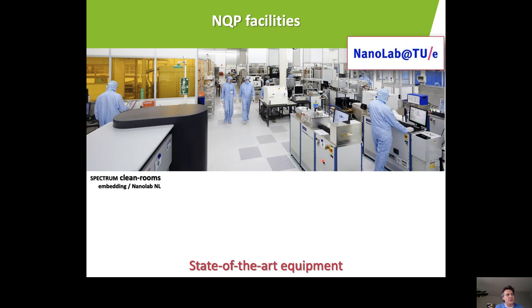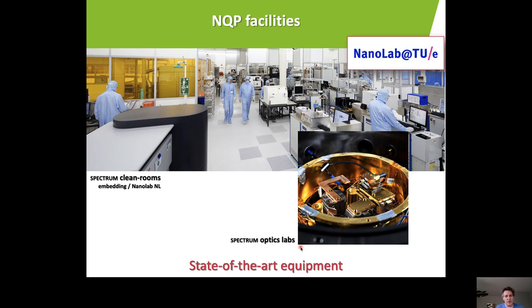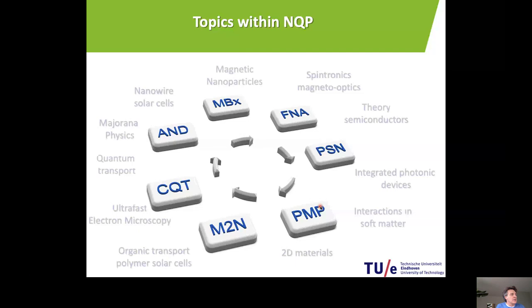At Spectrum, we have the clean room, which is mainly used by the groups in this nano quantum photonics track. People wear special suits to keep it clean inside. In the clean room, we can grow these materials using specialized machines and make very advanced devices. There are many PhD students and postdocs, and most of our master's students also work in this clean room. We also have optical labs where we can characterize materials and measure devices as a function of temperature — from elevated temperatures down to extremely low temperatures, to a few millikelvin.